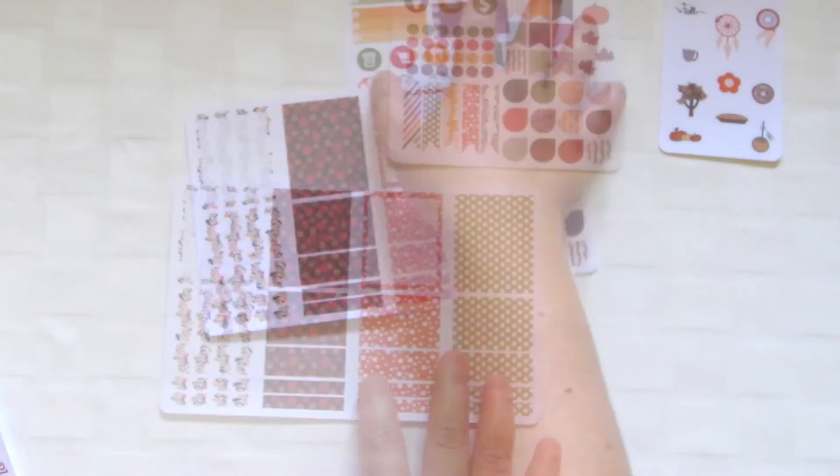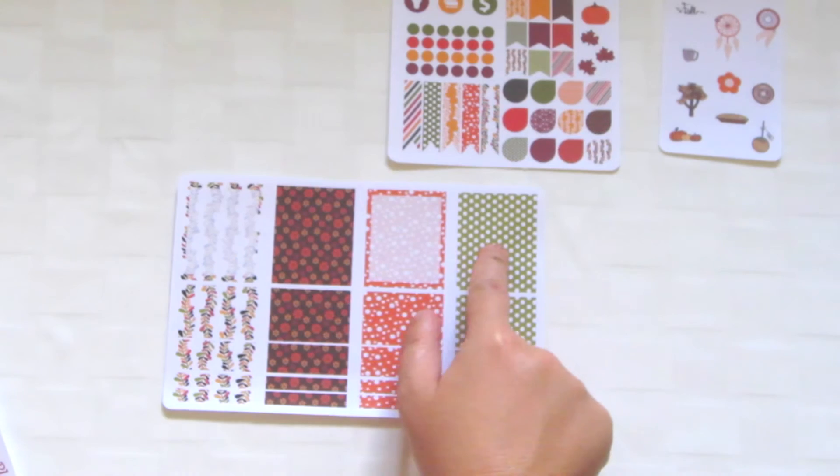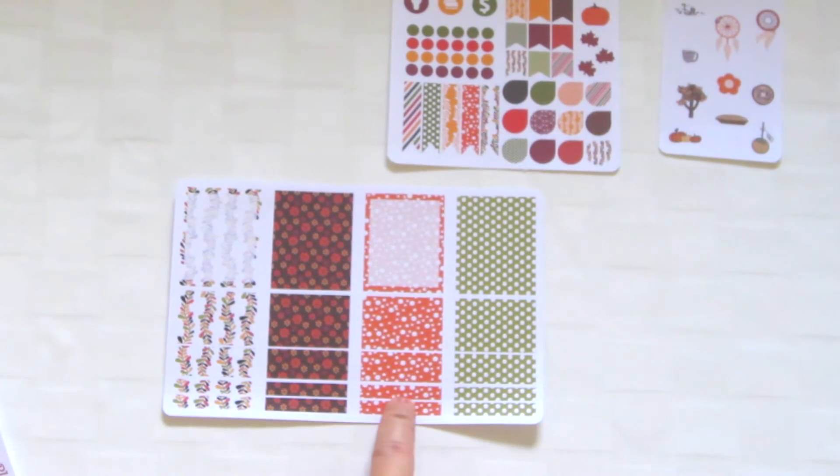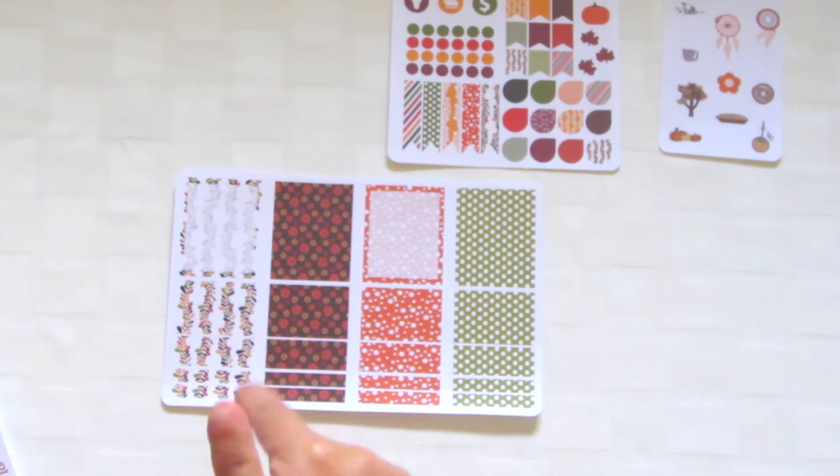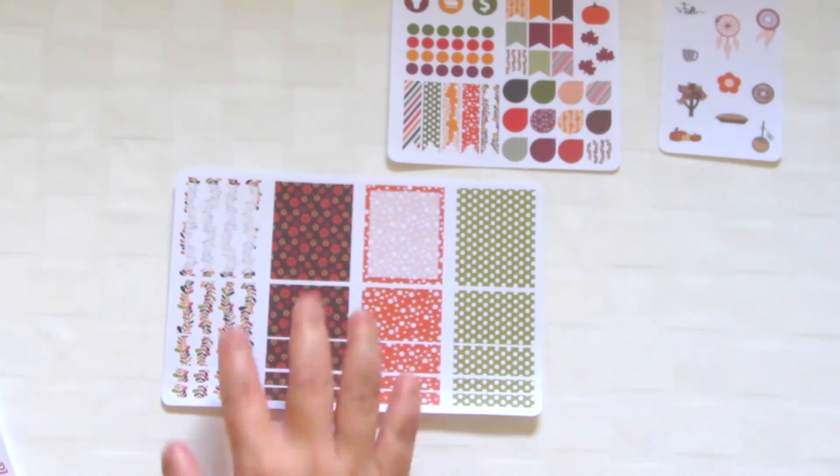Next I got her washi set, which has four full boxes, then a half box, then a quarter box, and then a banner size. I think it's cool the way it's broken up like that, so you kind of get one of everything for your pages.